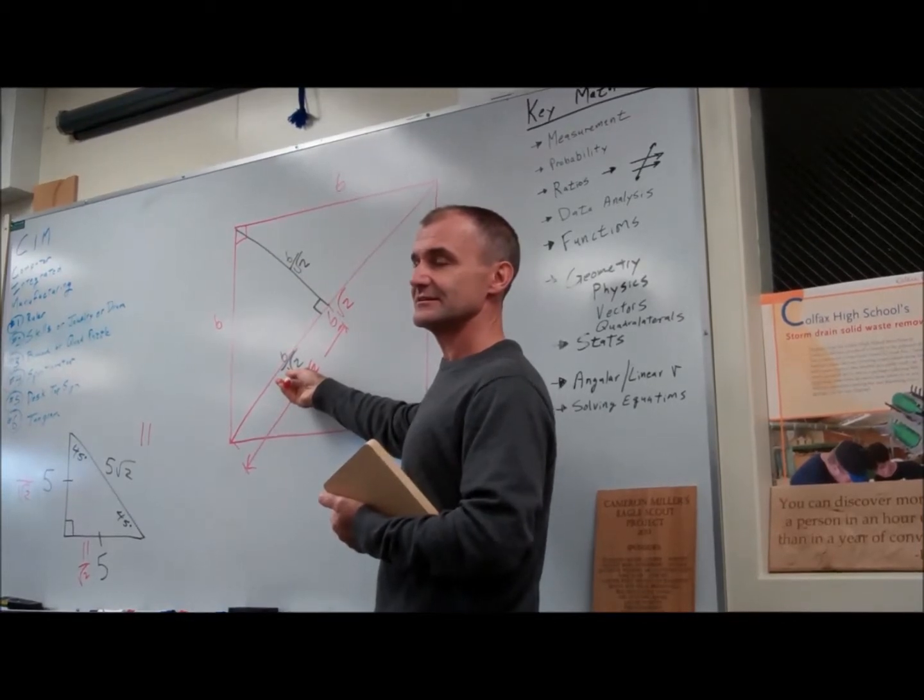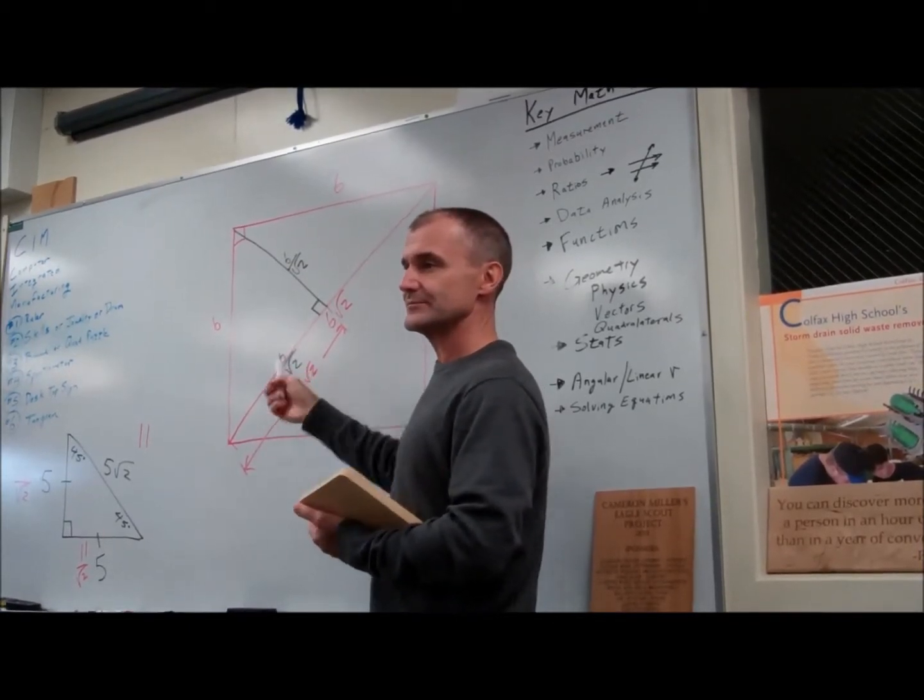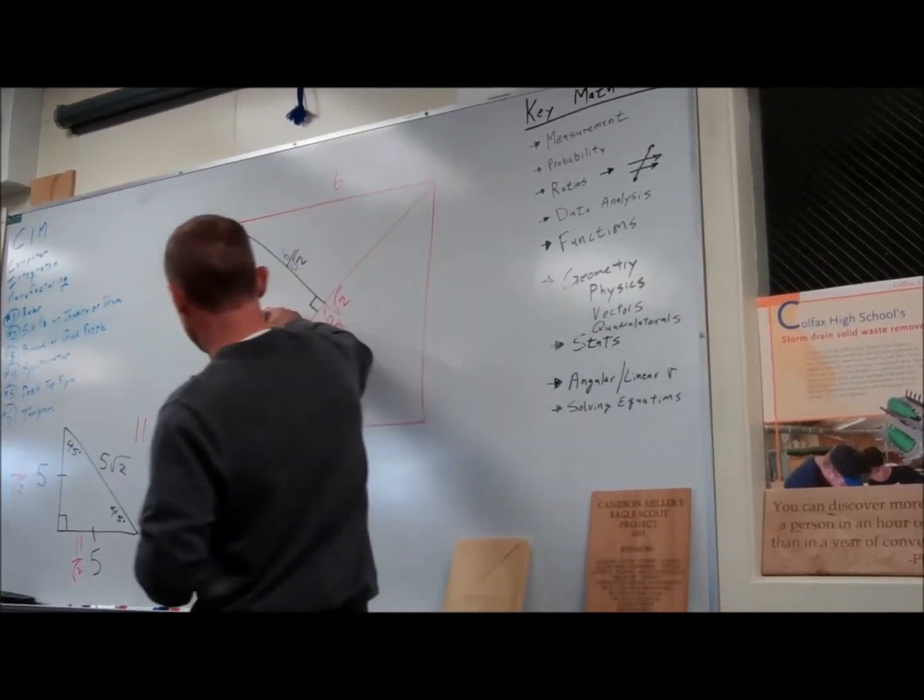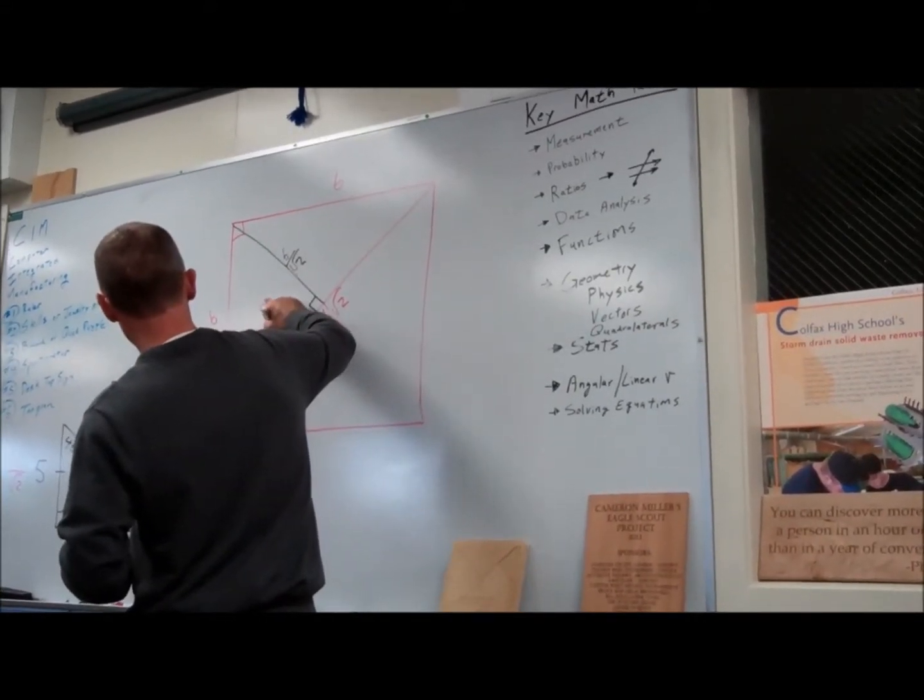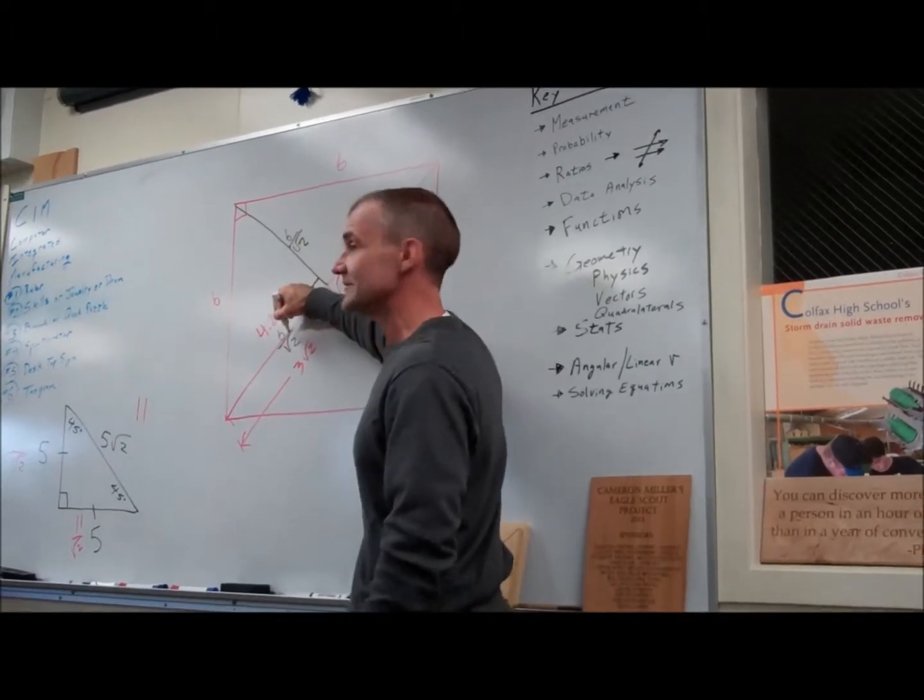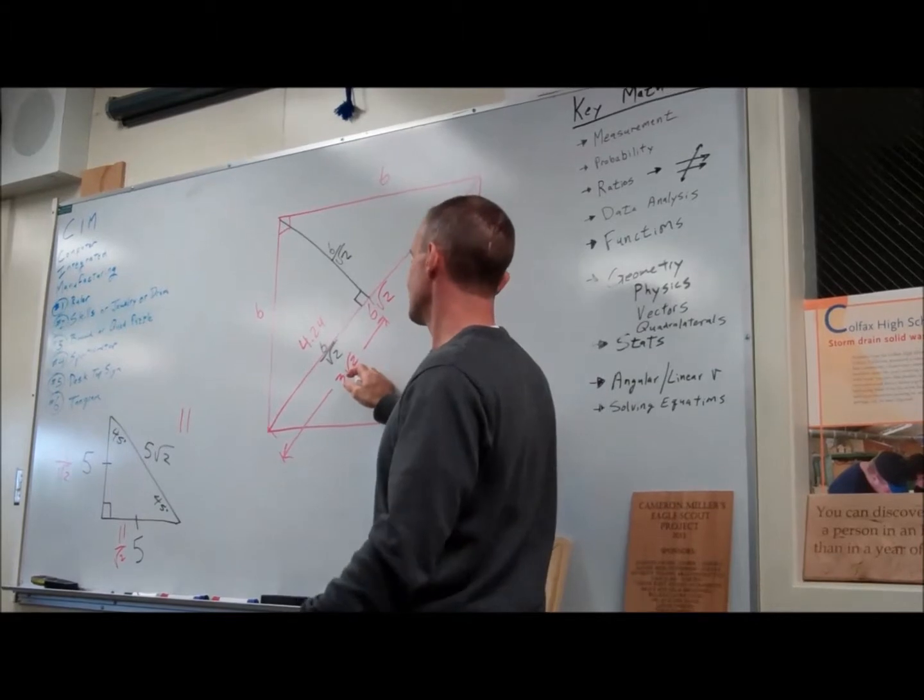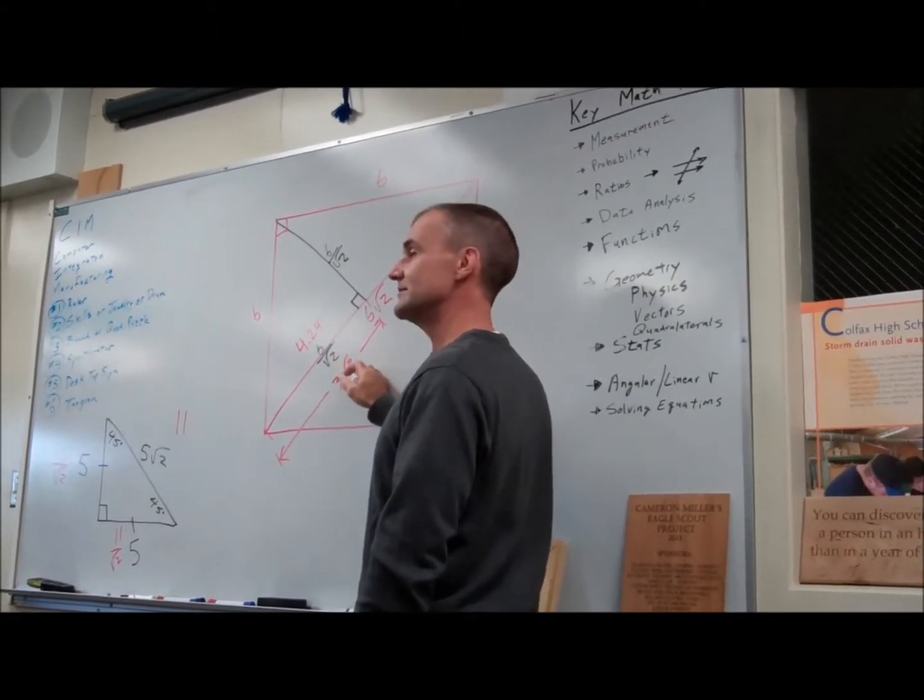So what's six divided by root two? Six divided by root two is 4.2426. So this is 4.24. That's called an approximate value versus the exact value. Do the same thing in my calculator with this, and I get 4.24. It's also the same thing, so I can see that they're the same.